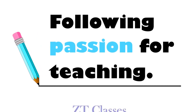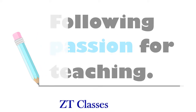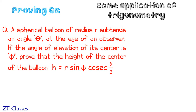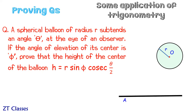Welcome to ZT classes. A spherical balloon of radius r sustains an angle of theta at the eye of an observer. The balloon is drawn with observer A on the ground, and this angle is given as theta.